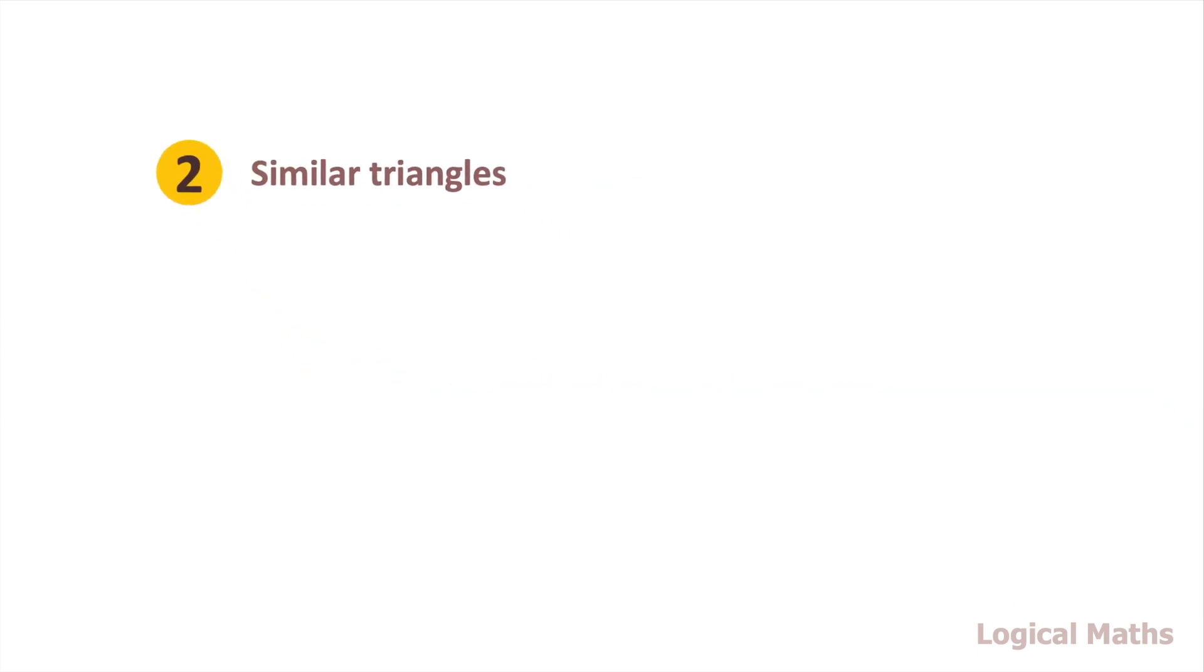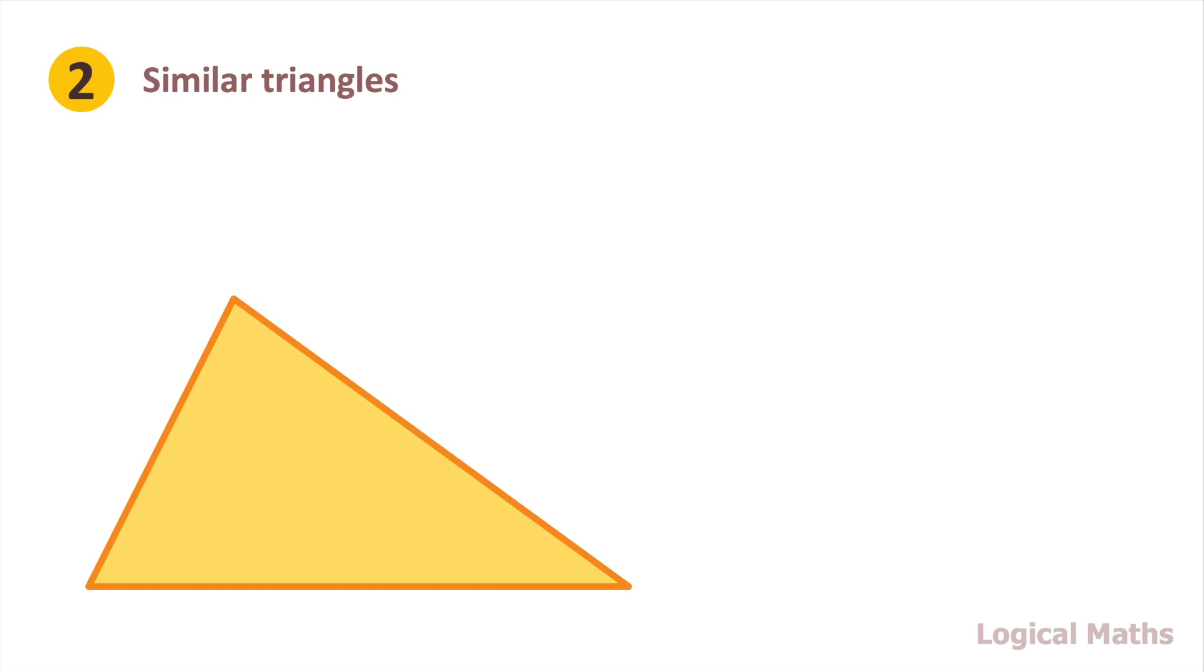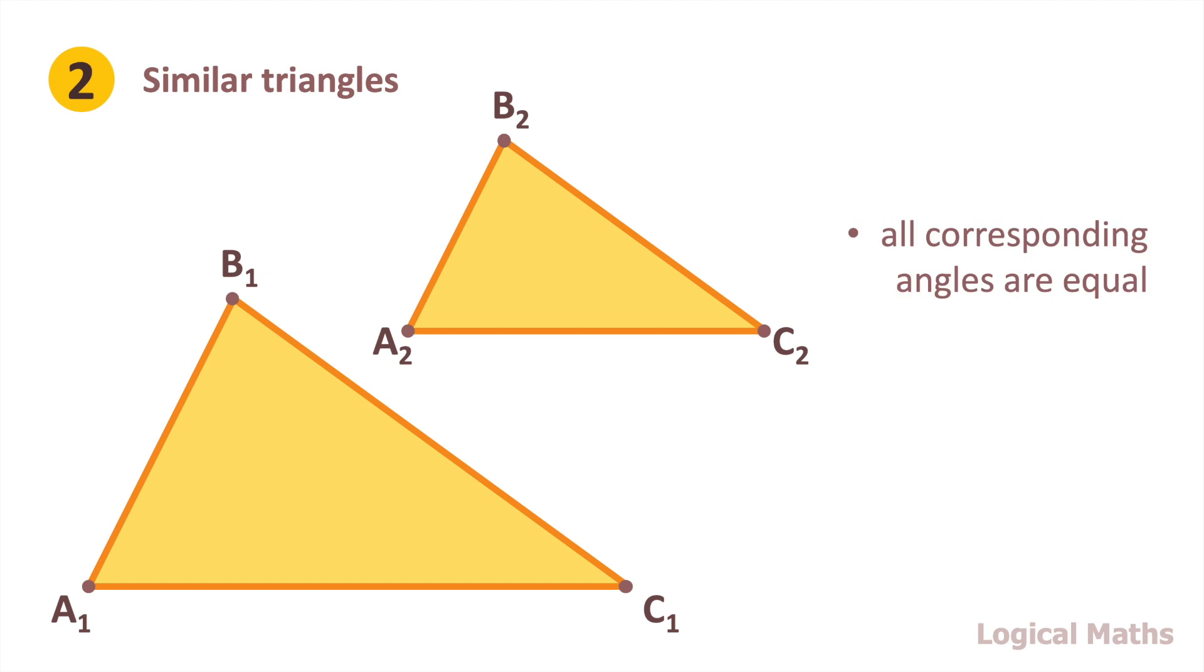Next move to similar triangles. Assume we have one triangle. Mark its vertices as A1, B1 and C1. And also we have another triangle with its vertices as A2, B2 and C2. If the triangles are similar, then all corresponding angles are equal. And all corresponding sides have the same ratio.